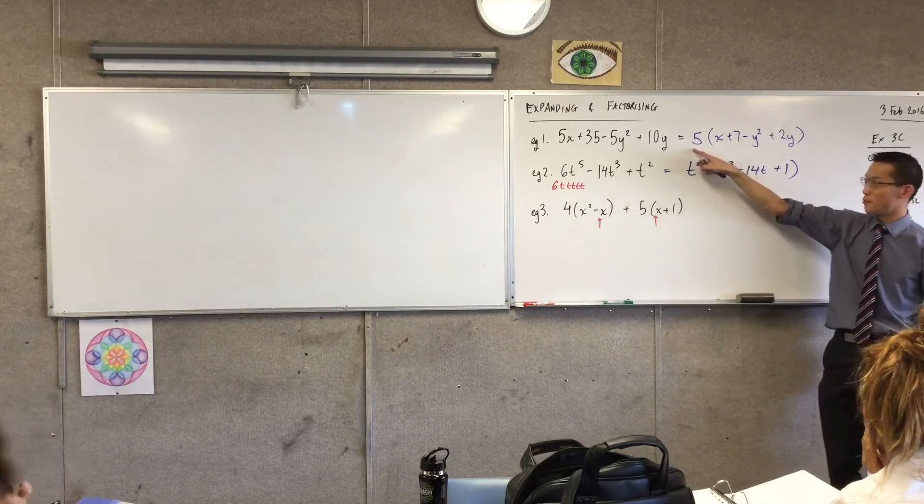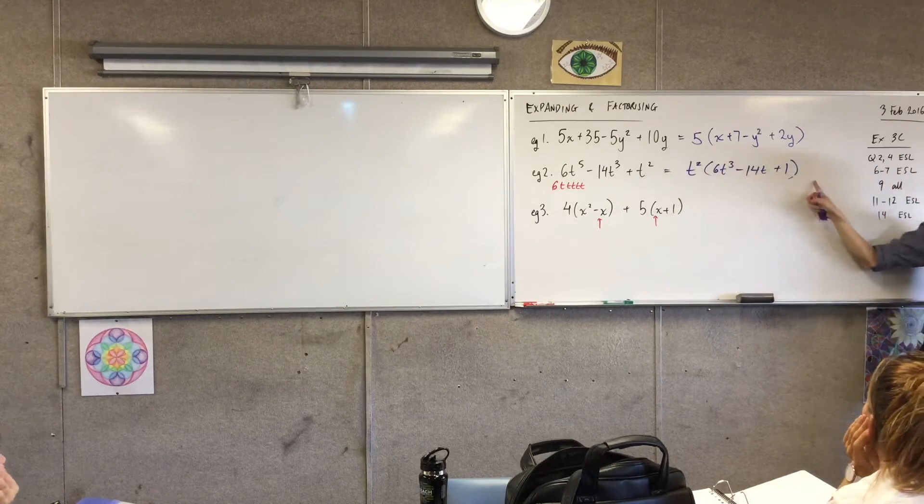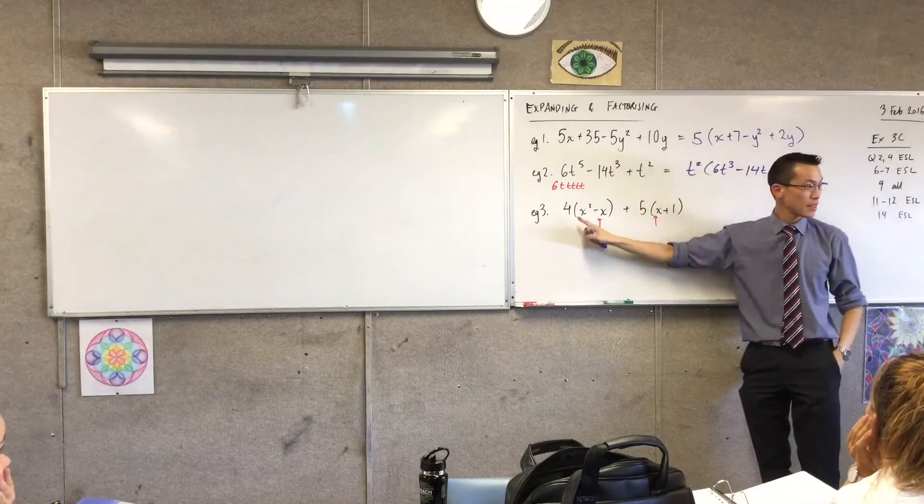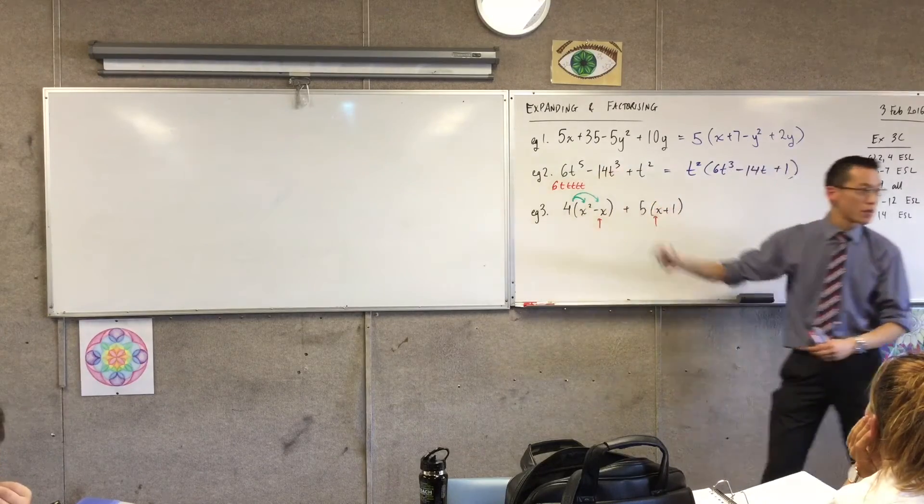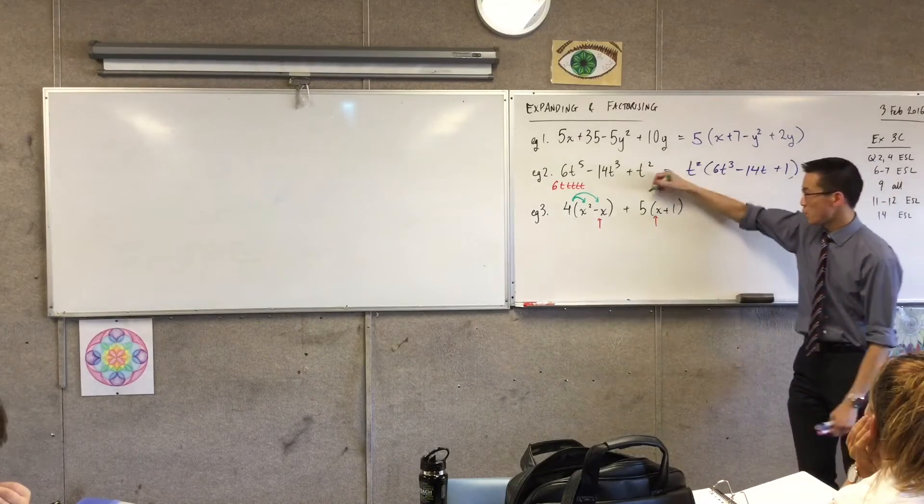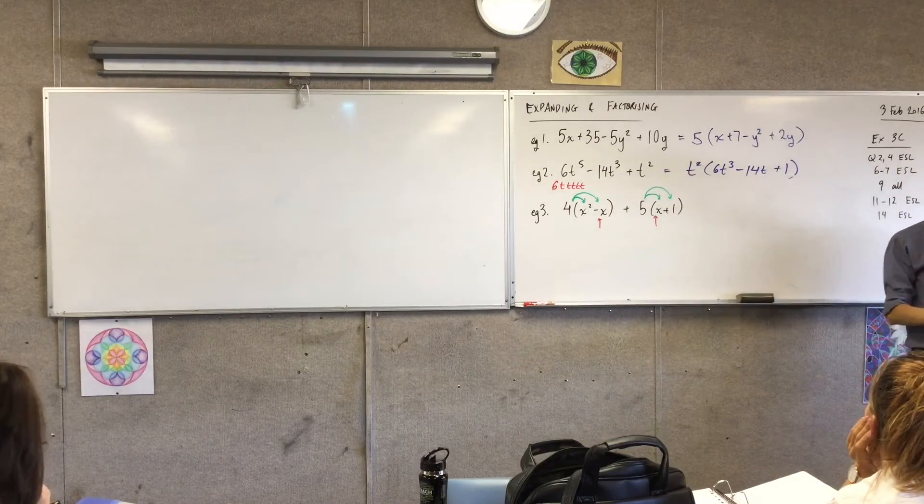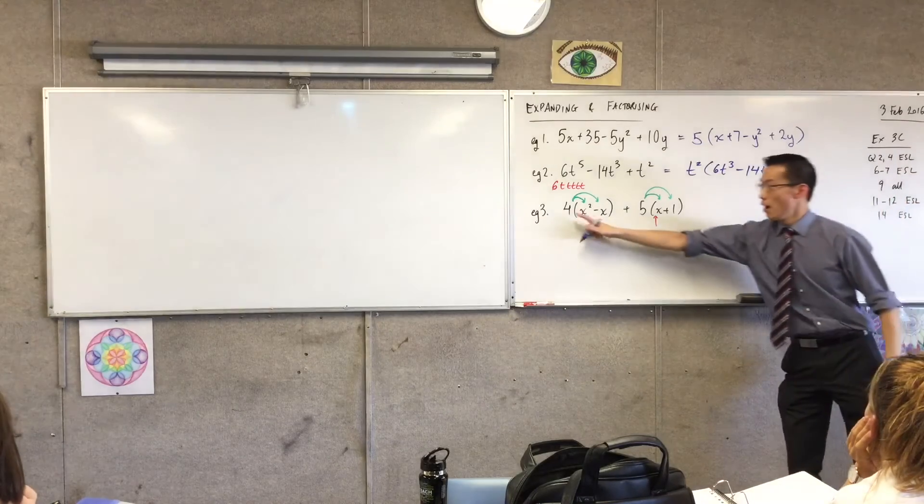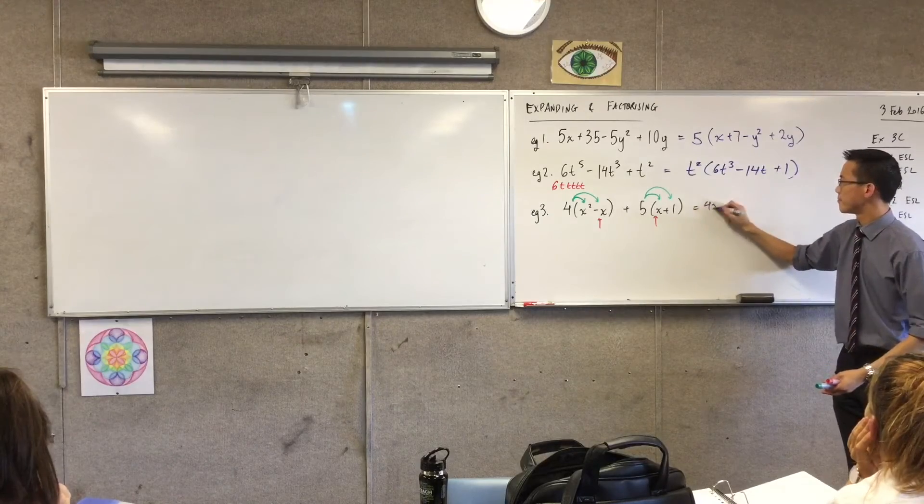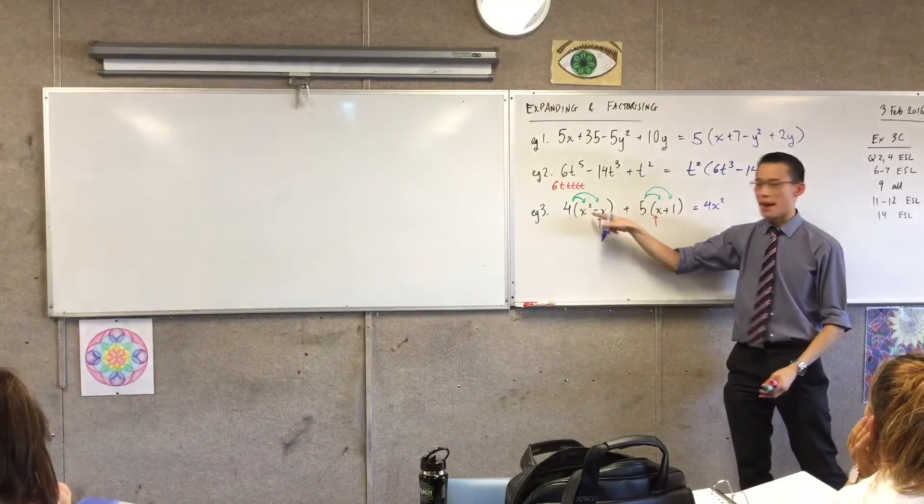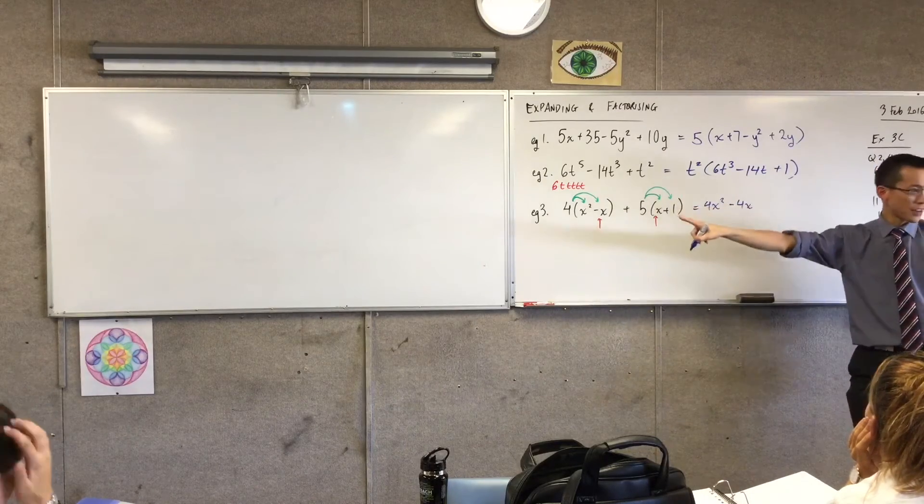So, remembering what we introduced brackets for, right? It's 5 times all that, or it's T² times all that. I'm just going to do the same thing here. Use color. This one means 4 times both of those guys. Yeah? And this one means 5 times both of those guys. So now I'm going to get rid of my brackets in one step. Watch. 4 times x²? 4x². 4 times minus x, that's the sign? Minus 4x. Okay?